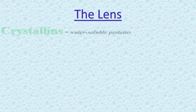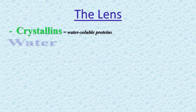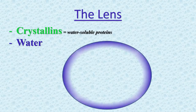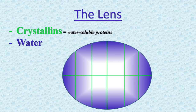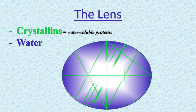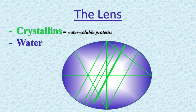The lens is made mostly of crystallins and water. Crystallins are water-soluble proteins that compose over 90% of the protein within the lens. The protein is arranged in a precise way that keeps the lens clear and lets light pass through it. In cataracts, some of the protein may clump together, resulting in clouding the lens. This process happens gradually.